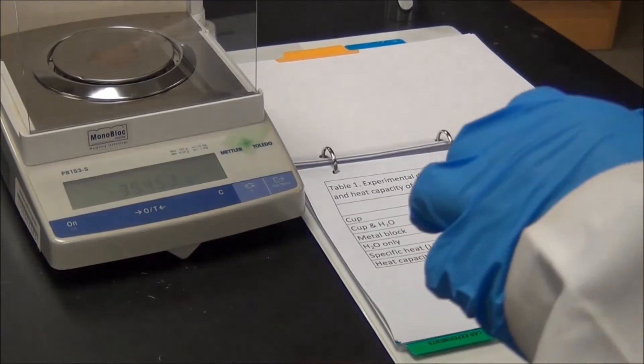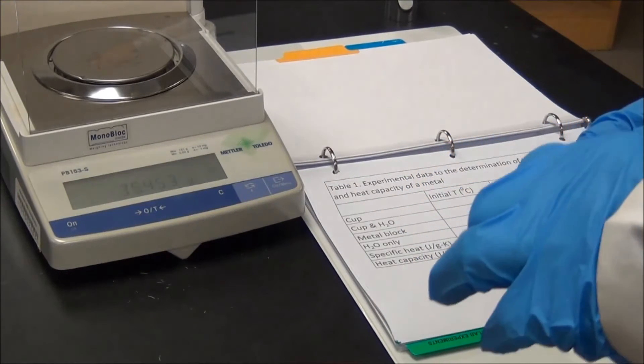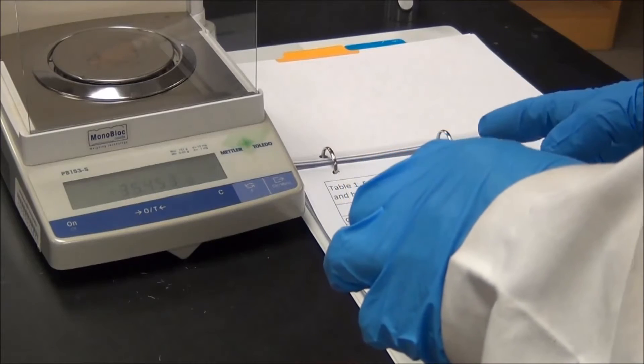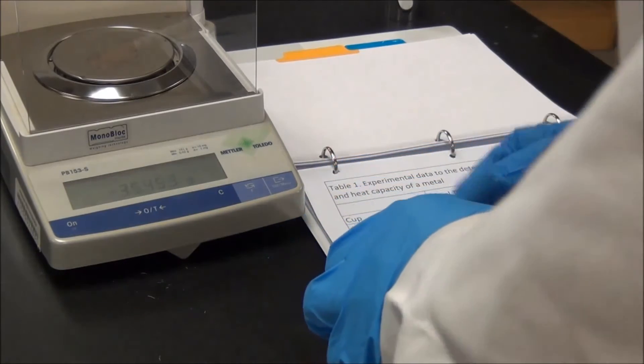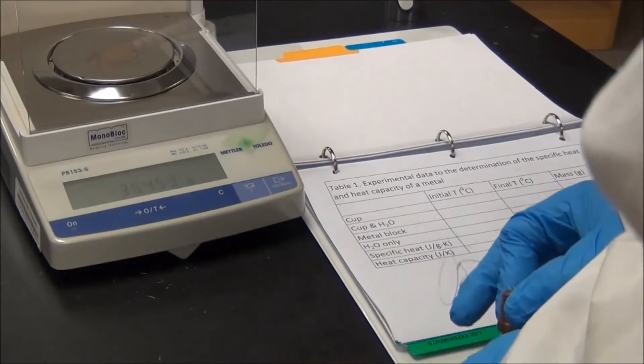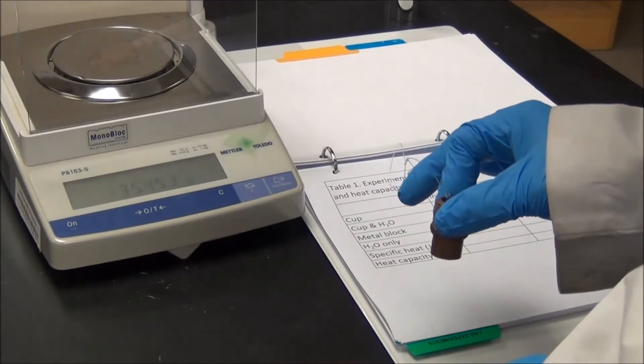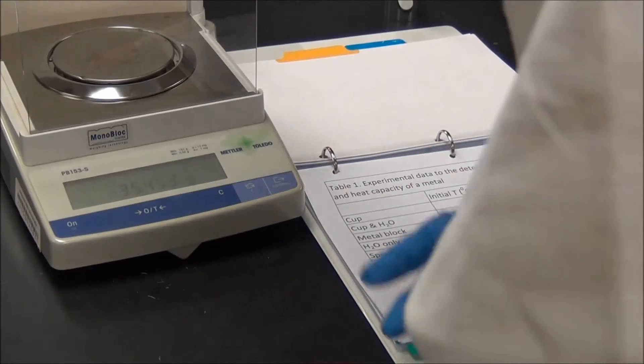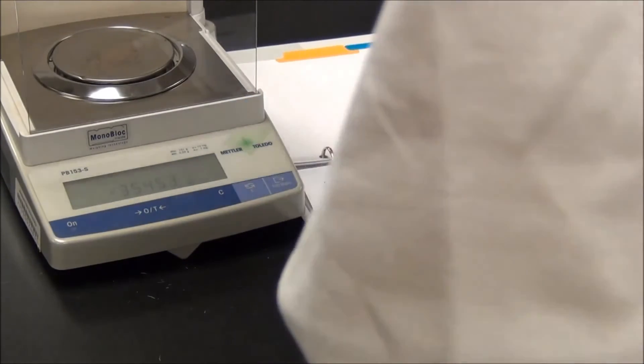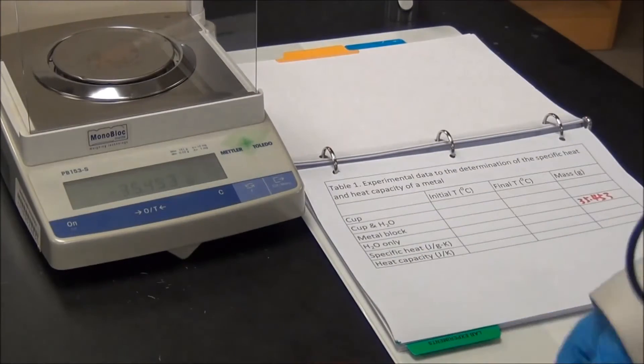Sometimes when you find a balance, it is already on. And in this situation, you must pay special attention to the initial reading before you place any object on top of the balance. Let's look at this one. The reading is negative 35.453 grams.